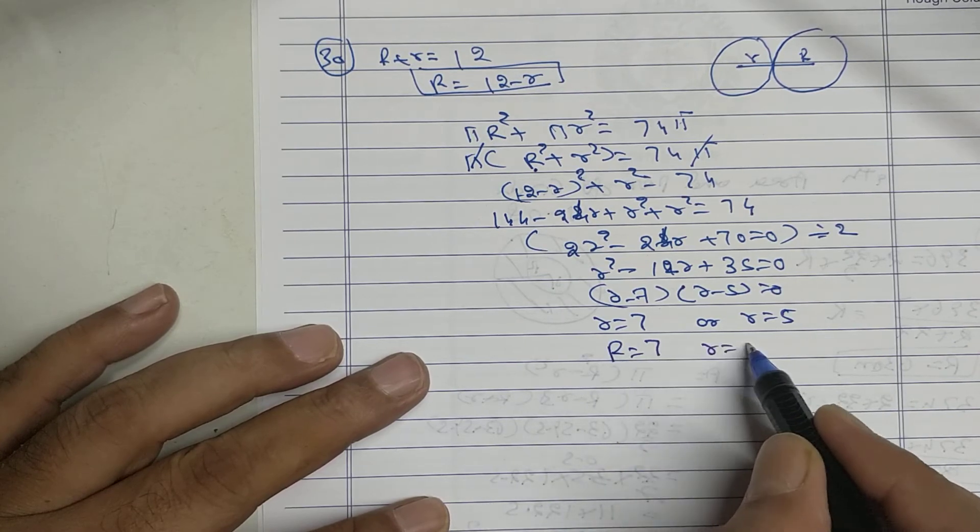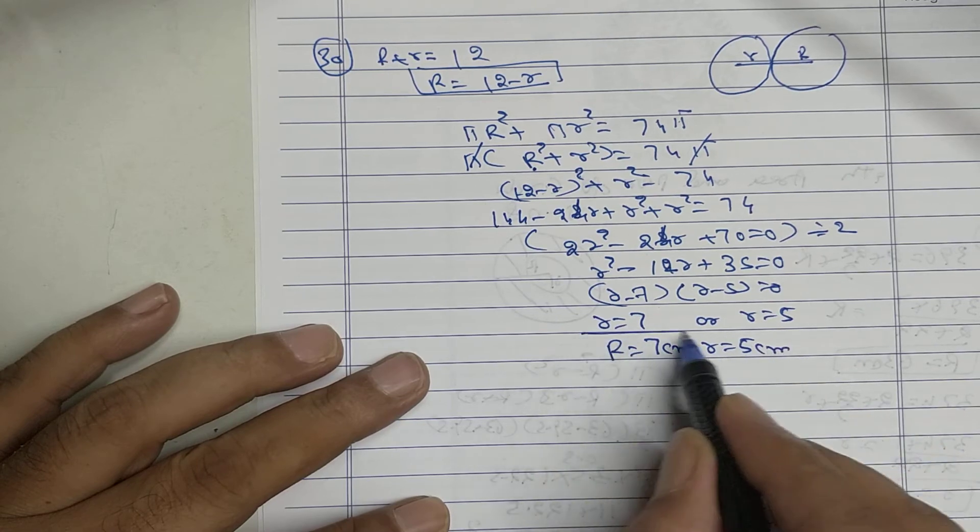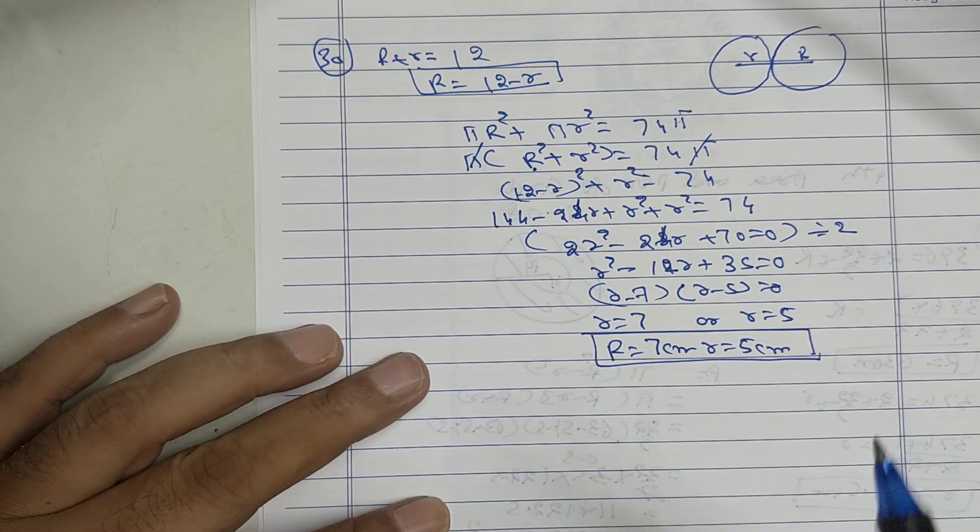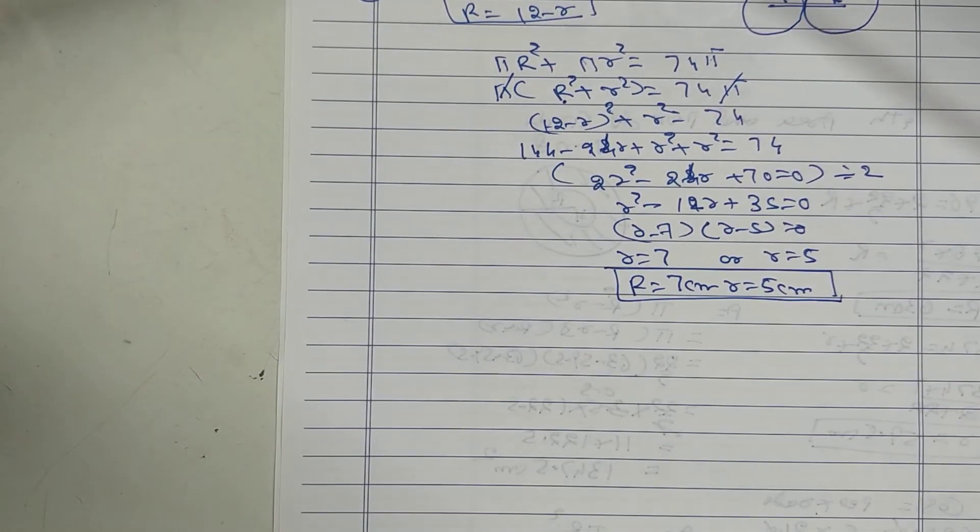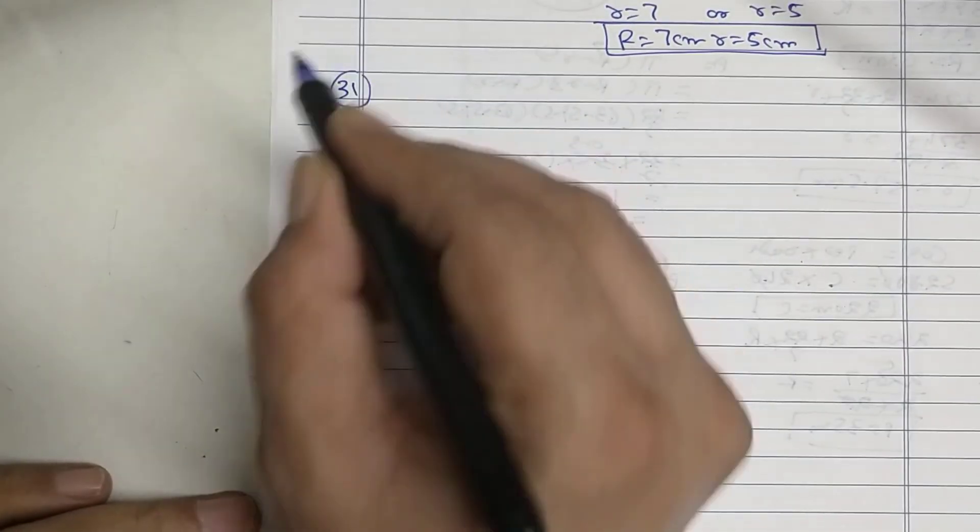So big R is 7, small r is 5. Sum number 31.